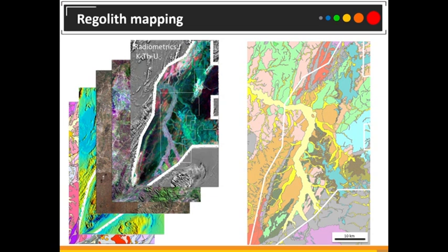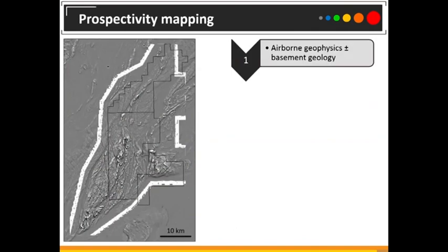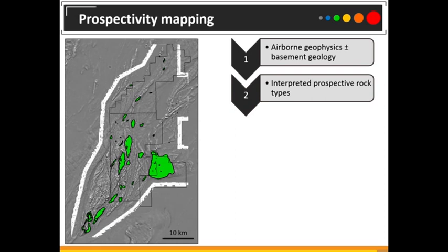If you compare just the radiometrics alone with that regolith map, you can see the large alluvial channels are being picked out easily. The dark areas on the radiometric maps are your mafic body, so you can see very quickly how these images can help. Also look for changes in vegetation — different vegetation grows over different geologies. Using different Landsat processing and channels can be really helpful. So, once we have our regolith map, the next step is to make a prospectivity map — essentially helping me know where to focus my soil sampling. In this example I used airborne geophysics and basement geology, looking for mafic and ultramafic intrusions.